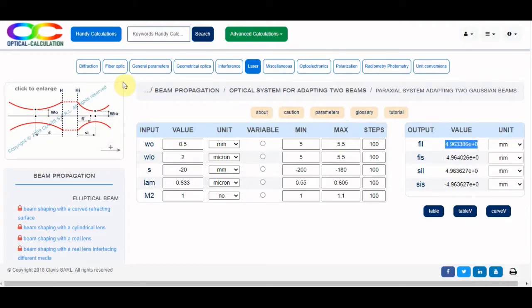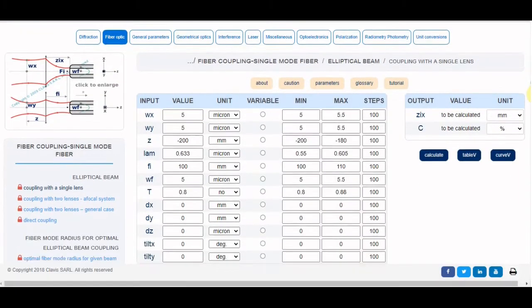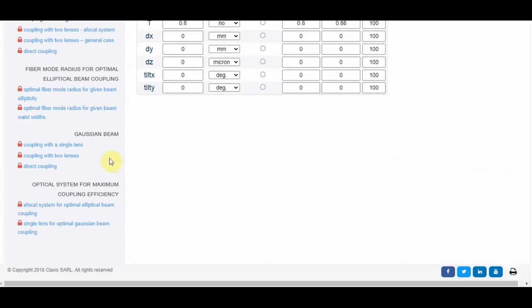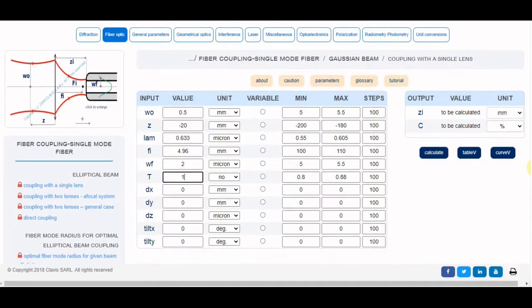For the second step, let's go now in the fiber optic and coupling in a single mode fiber topic. In the Gaussian beam section, the page coupling with a single lens allows to calculate the coupling efficiency. W0 is the incident beam waist radius. Z is the algebraic distance from the lens to the incident beam waist. LAM is the wavelength. Fi is the focal length, 4.96 mm in our case. WF is the fiber mode radius.